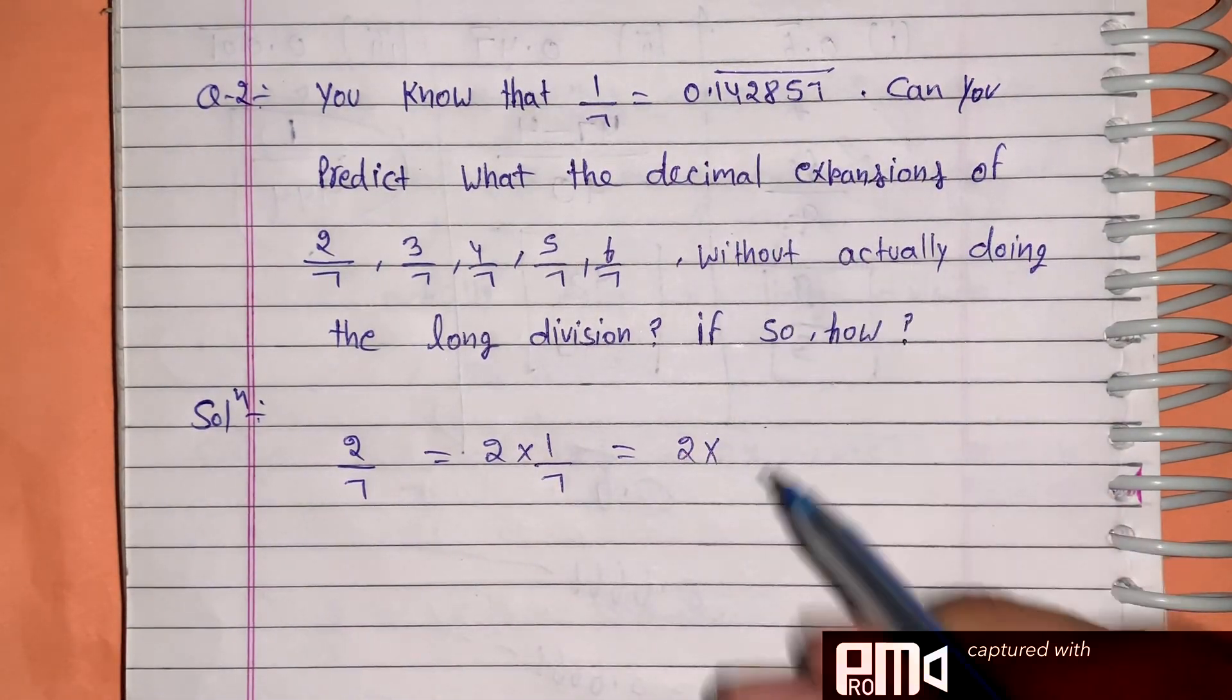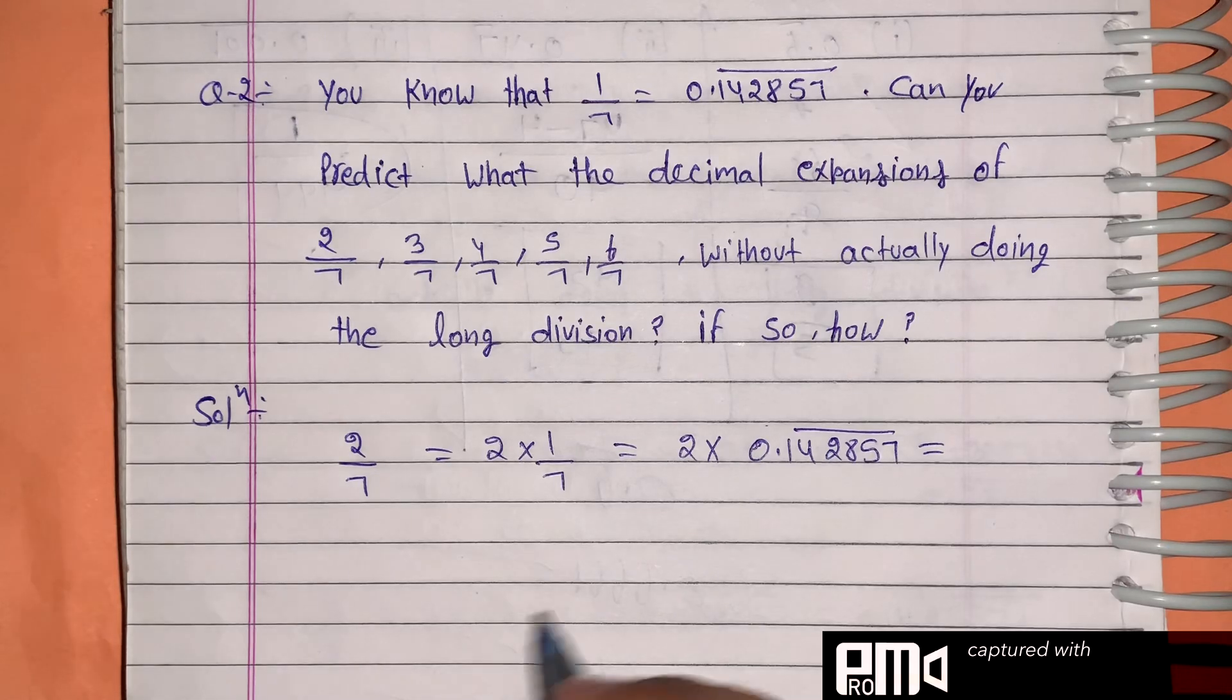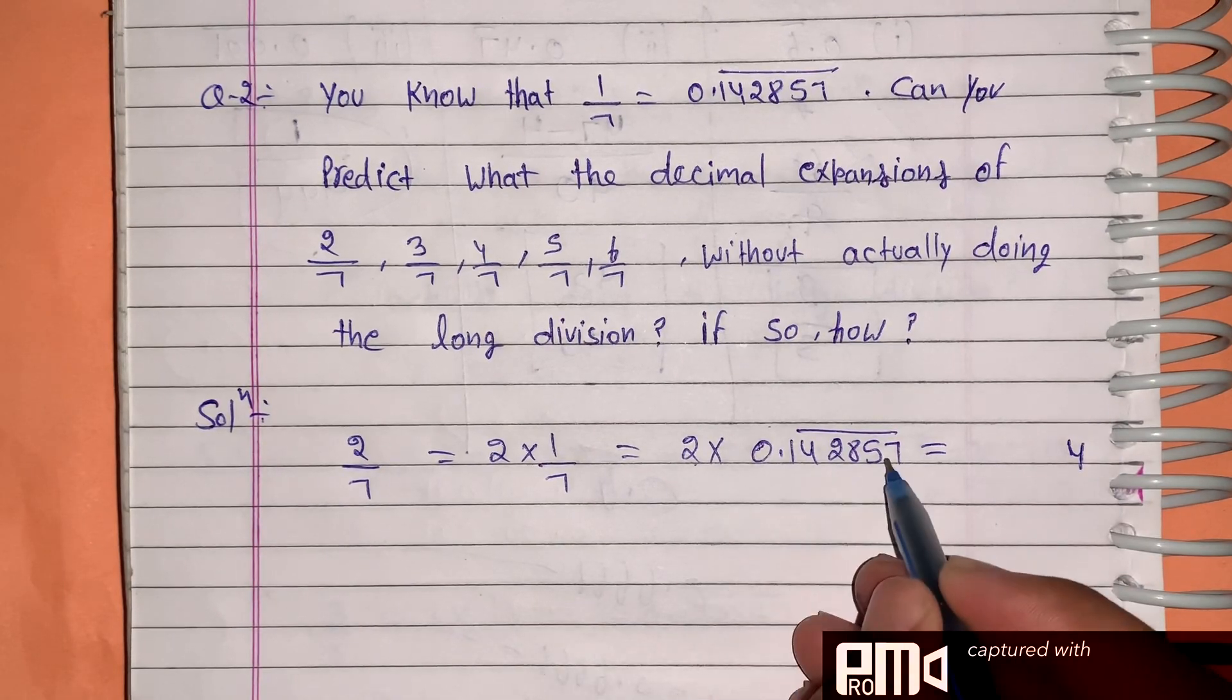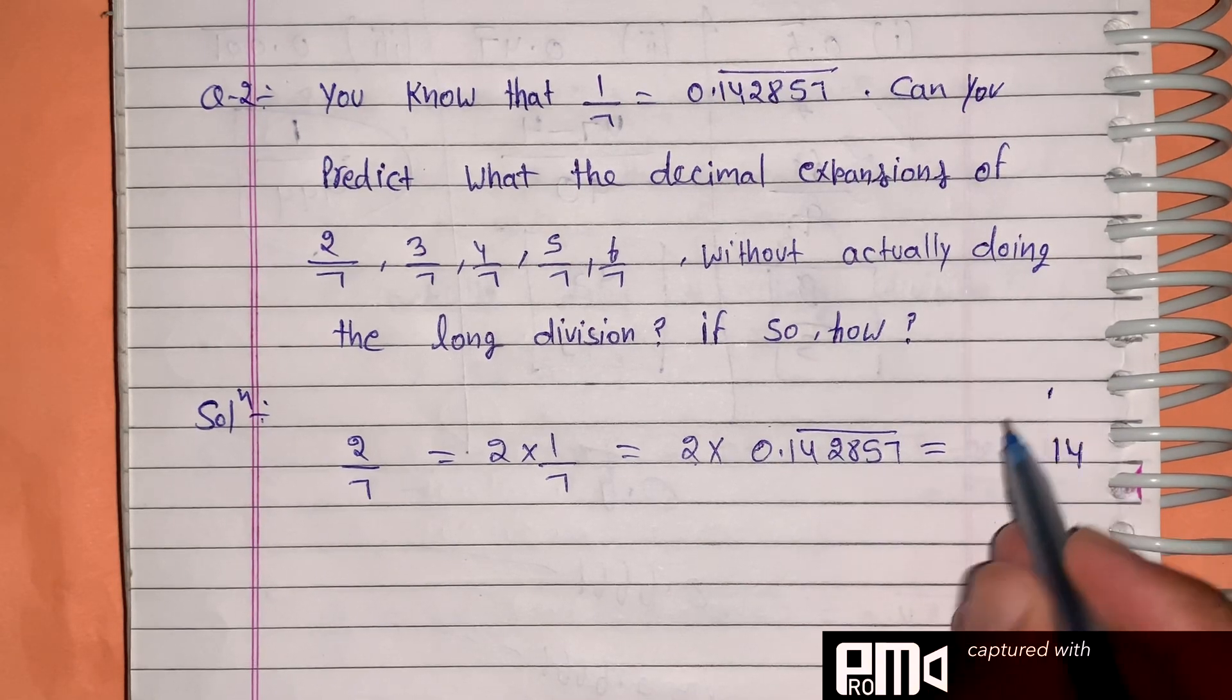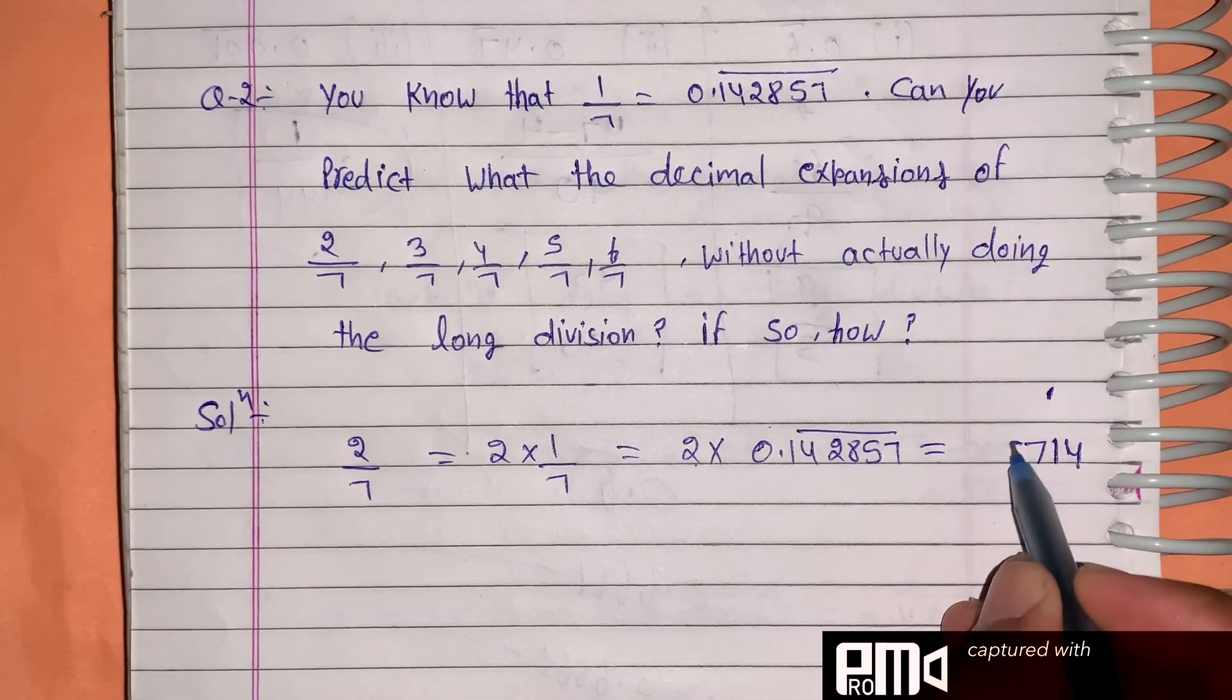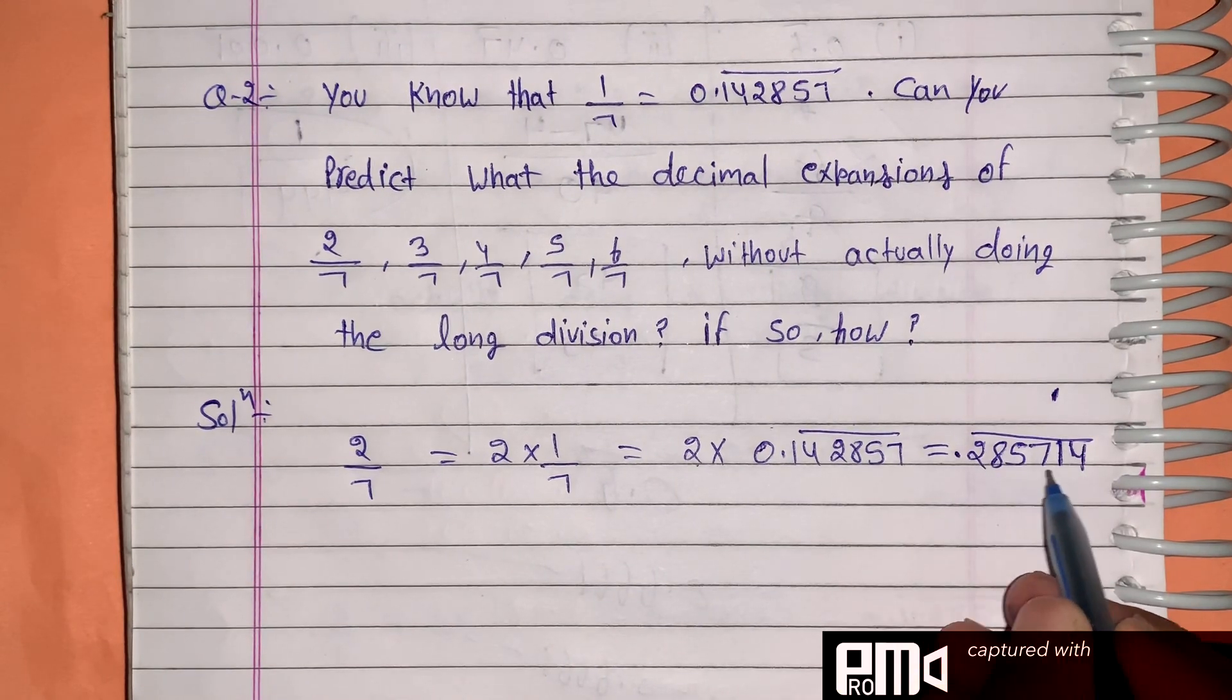Since 1/7 equals 0.142857 repeating, we can multiply: 2 times 0.142857. Multiplying gives us: 2 times 7 is 14, carry 1; 2 times 5 is 10, carry 1, making 11; 2 times 8 is 16, plus 1 is 17, carry 1; continuing this way, we get 0.285714 repeating.